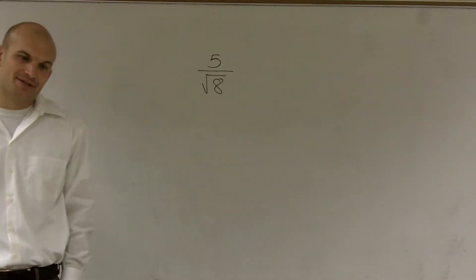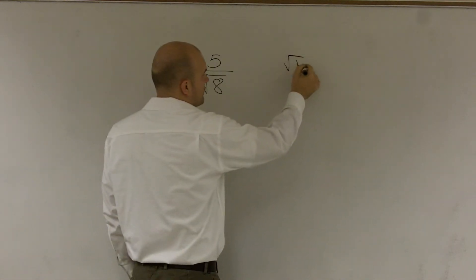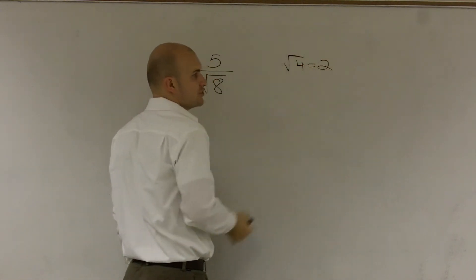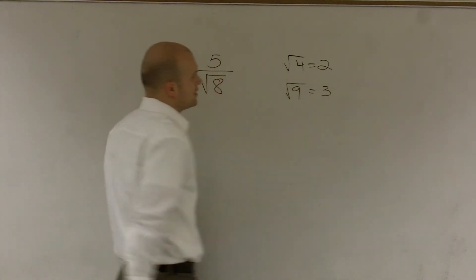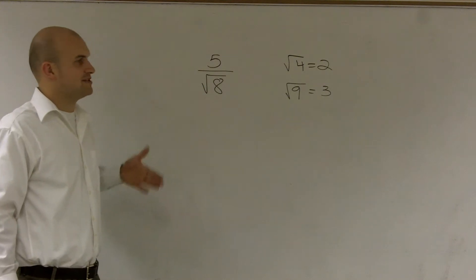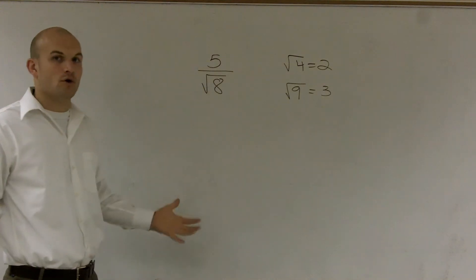One thing you need to know is we know the square numbers. Square root of 4 gives you the integer 2, and the square root of 9 gives you the integer 3. So therefore, the square root of 8 is somewhere going to be between 2 and 3. So it's not going to be a whole number.